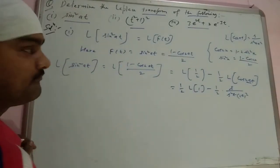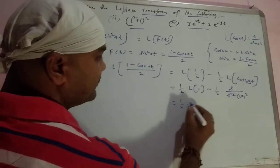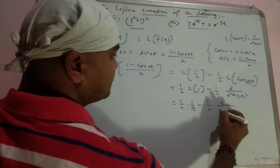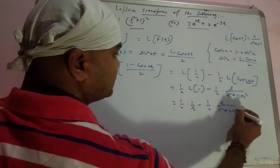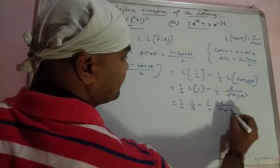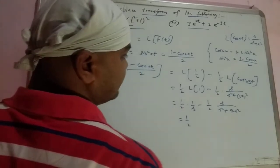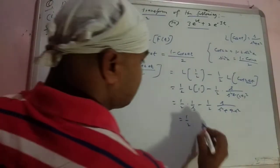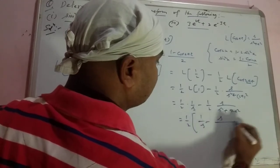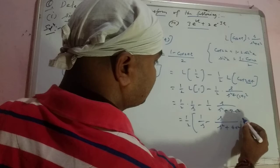With 2a whole square, we get half Laplace of 1 which is 1 by s, minus 1 by 2 times s upon s square plus 4a square. Taking half common, we get one half times 1/s minus s upon s square plus 4a square.